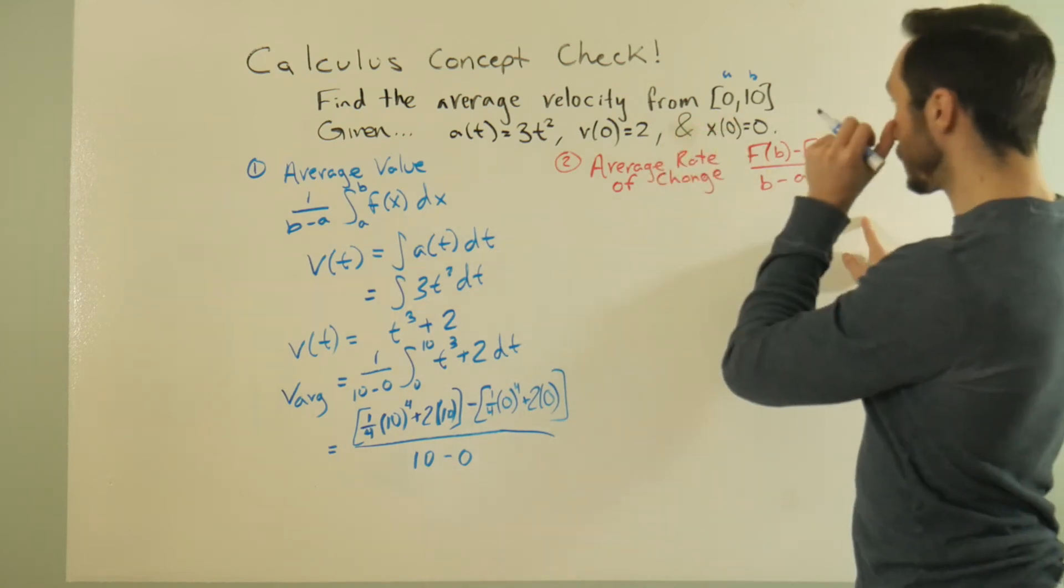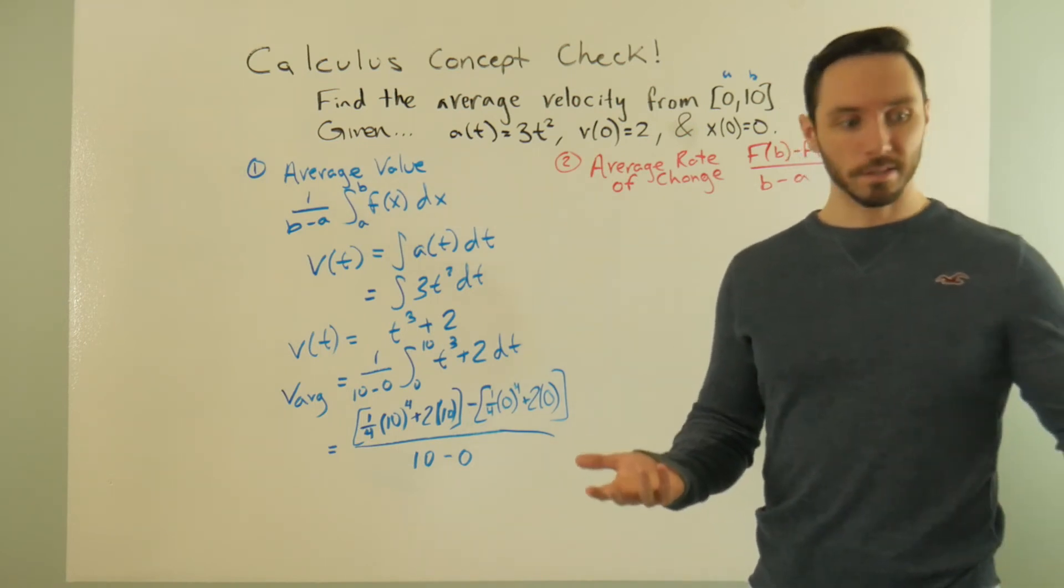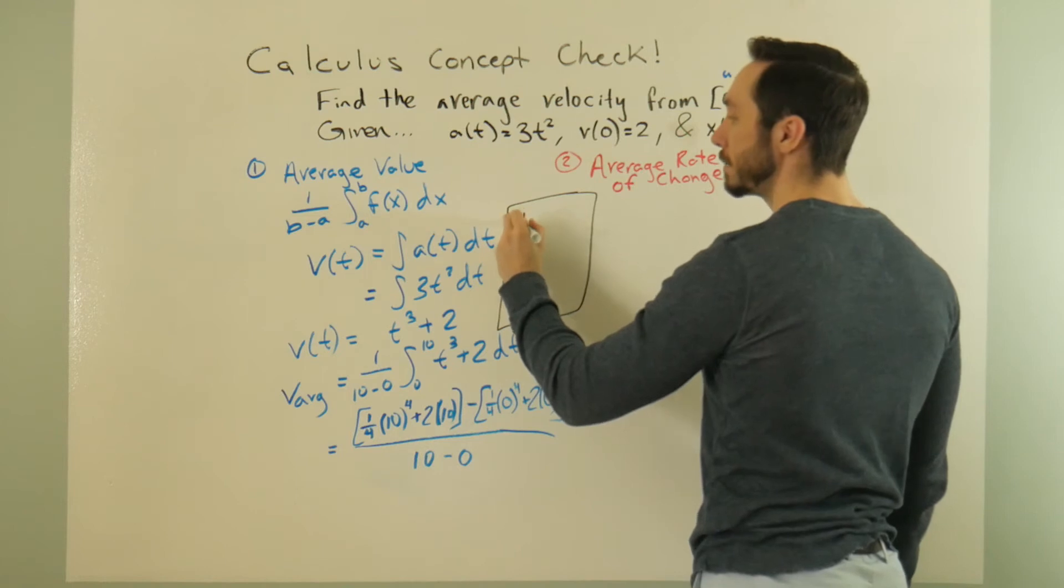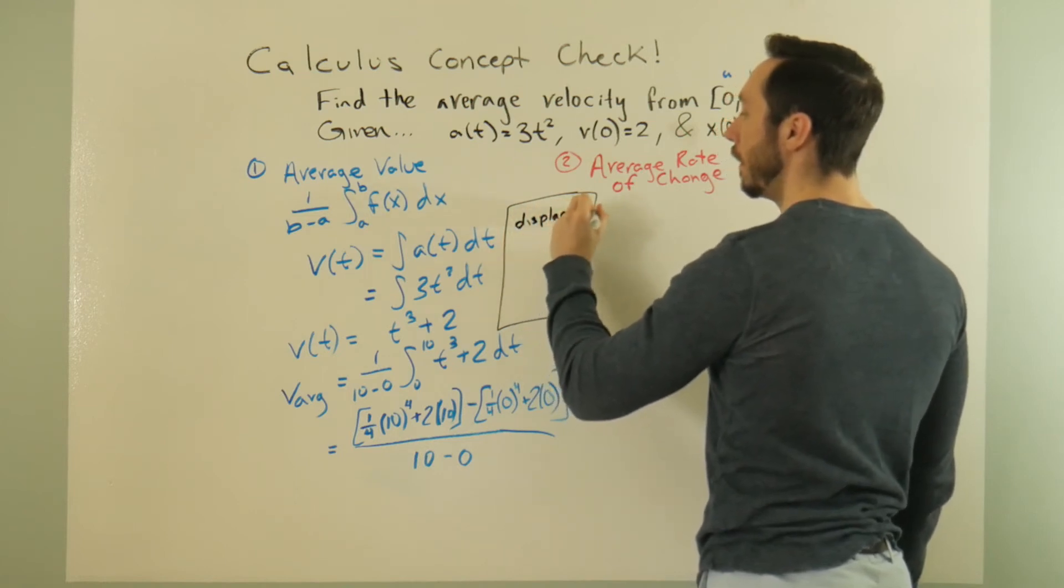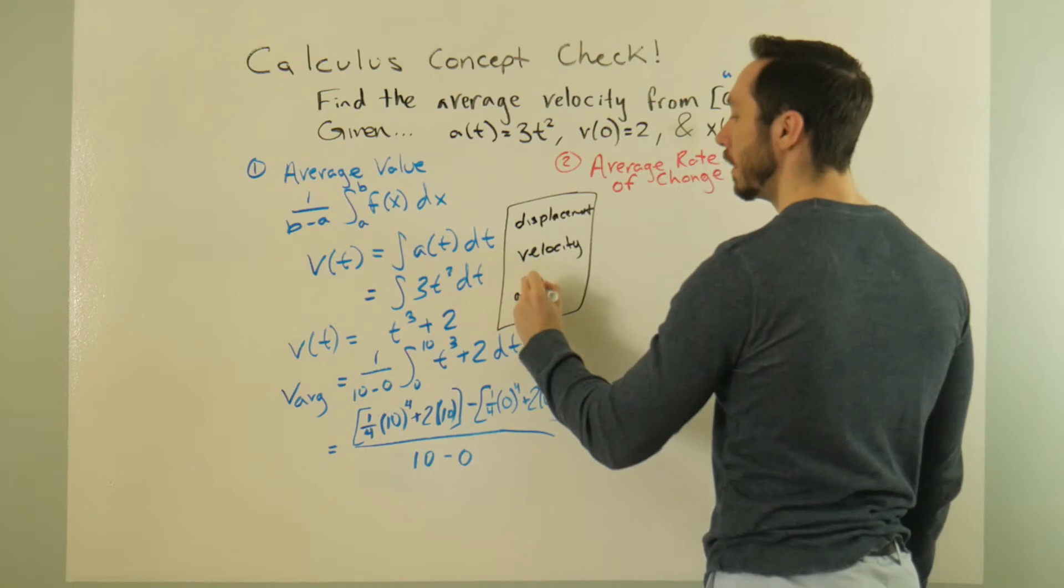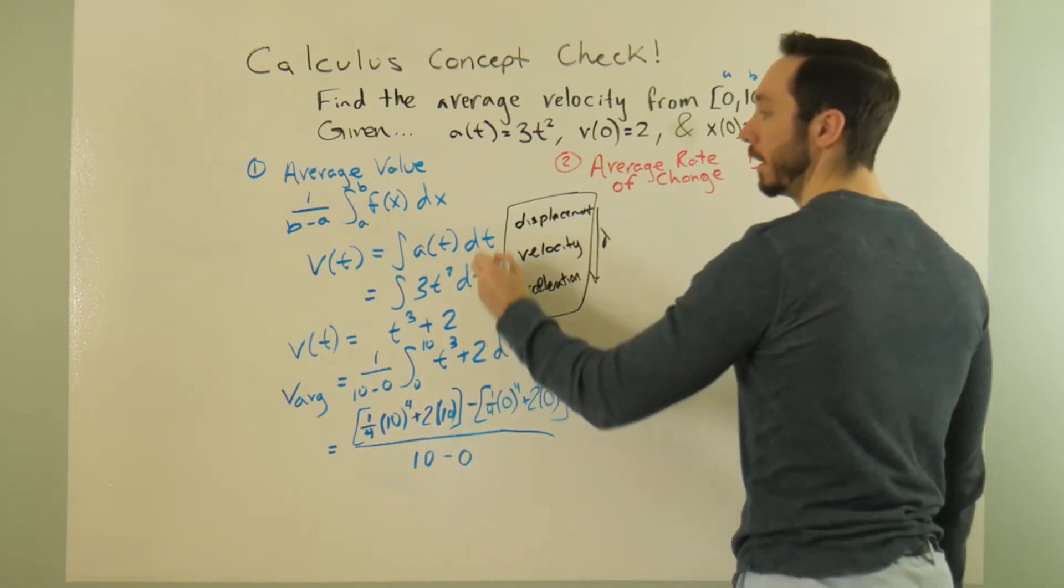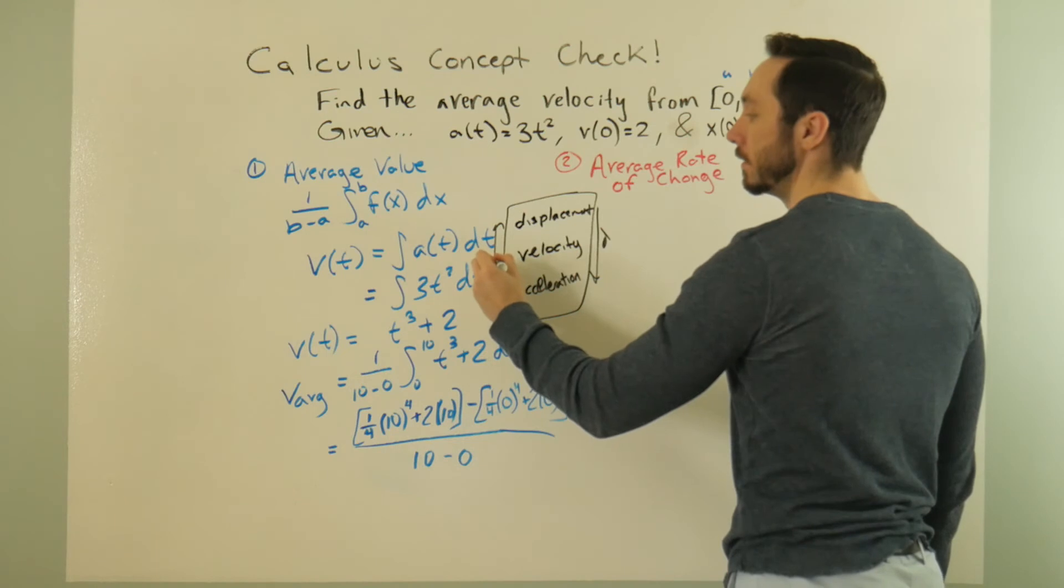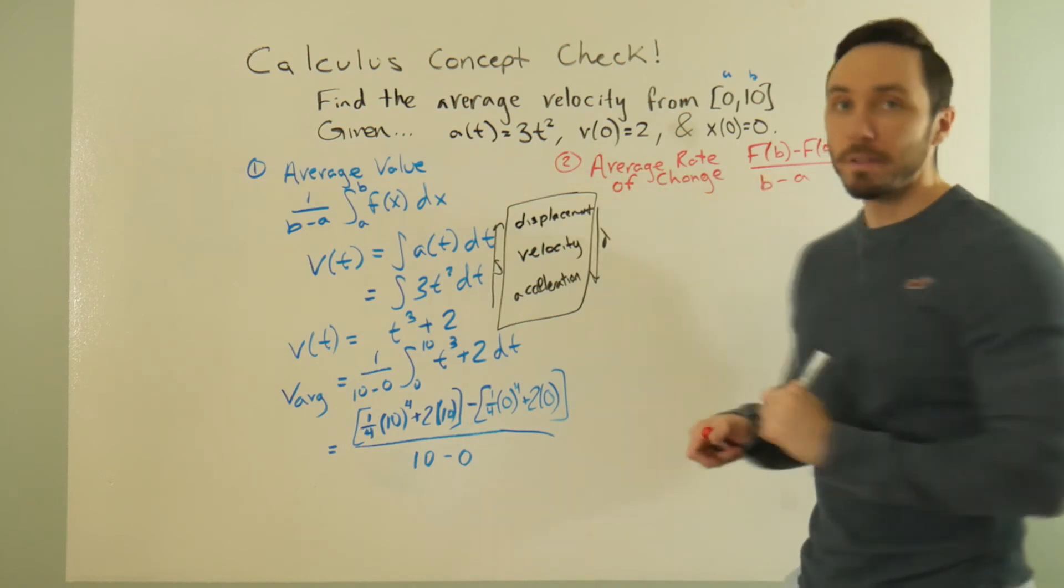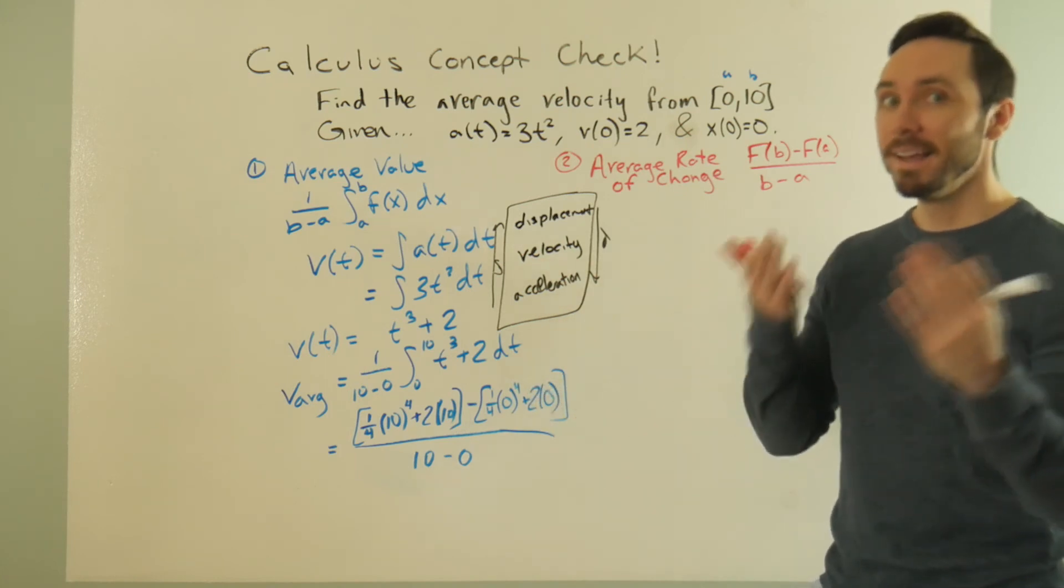How do we do this with average rate of change? If I find the average rate of change of a velocity function, I'm finding my average acceleration because acceleration is the rate of velocity. So maybe in this box I can kind of highlight that notion. If we're going from displacement to velocity to acceleration, going down we're taking the derivative. Going up, we're taking the integral.